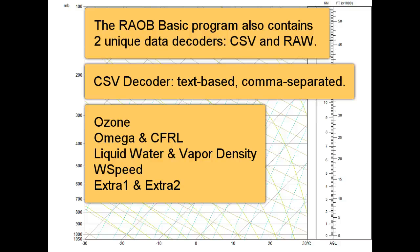liquid water and vapor density, which are produced by radiometrics data, W-speed, which is the vertical velocity data component, extra-1 and extra-2, which are two data parameters that are user-definable.